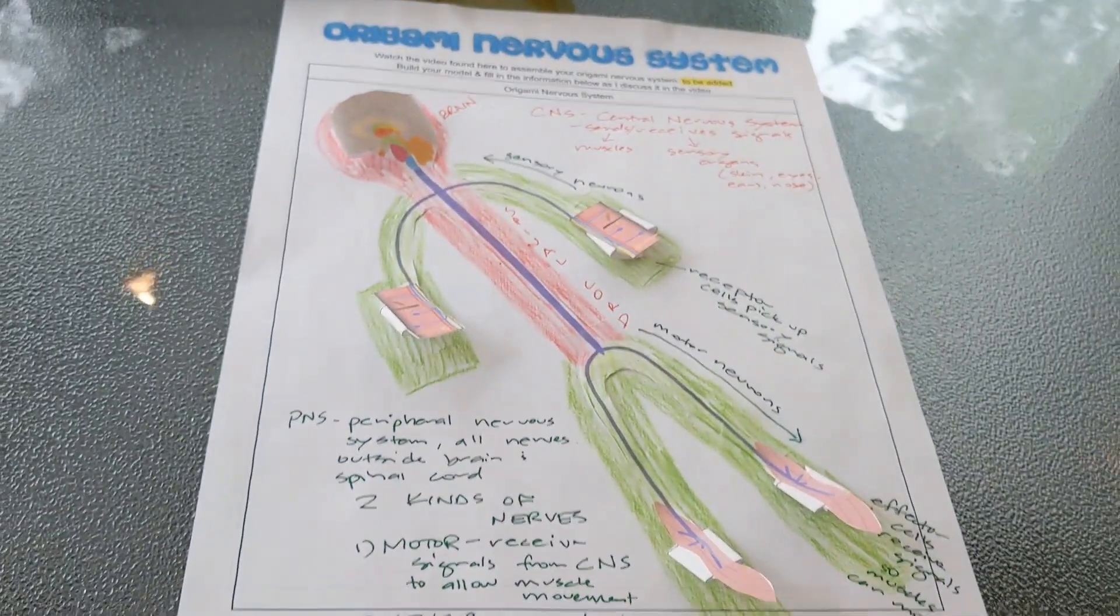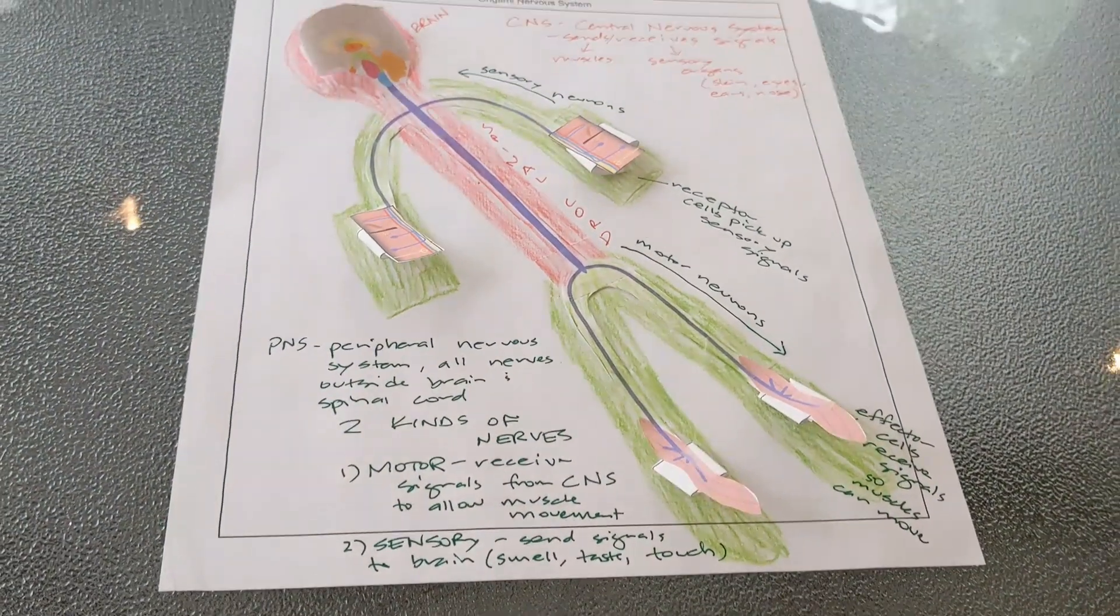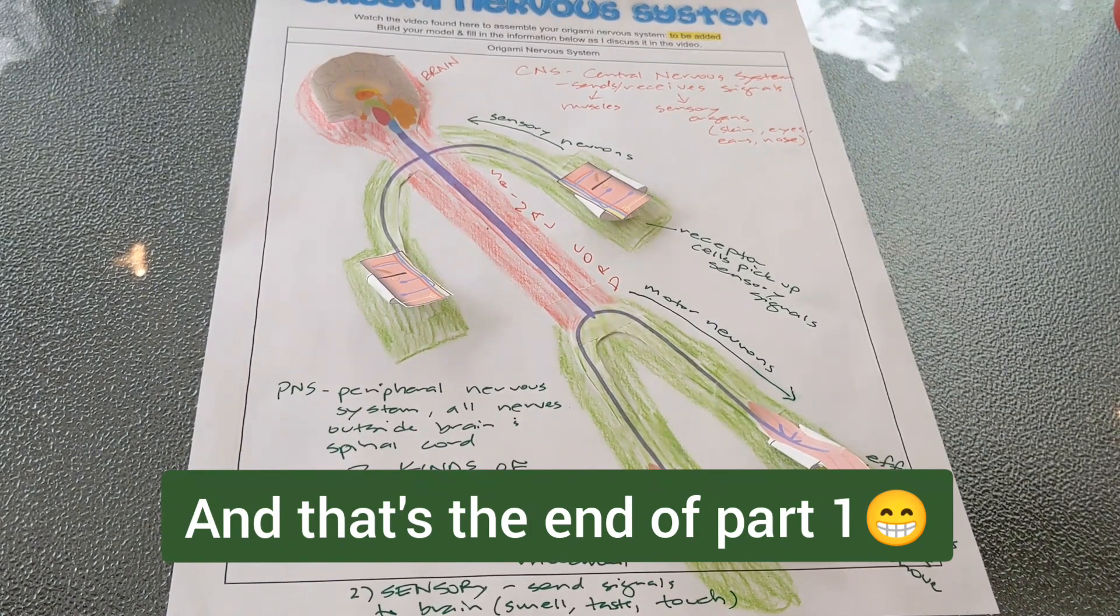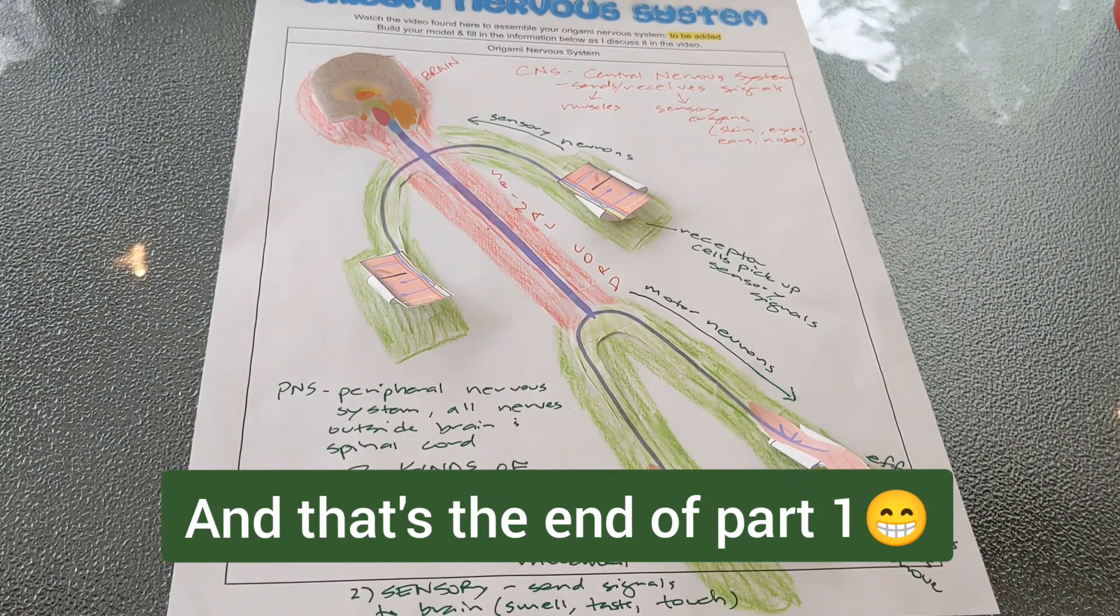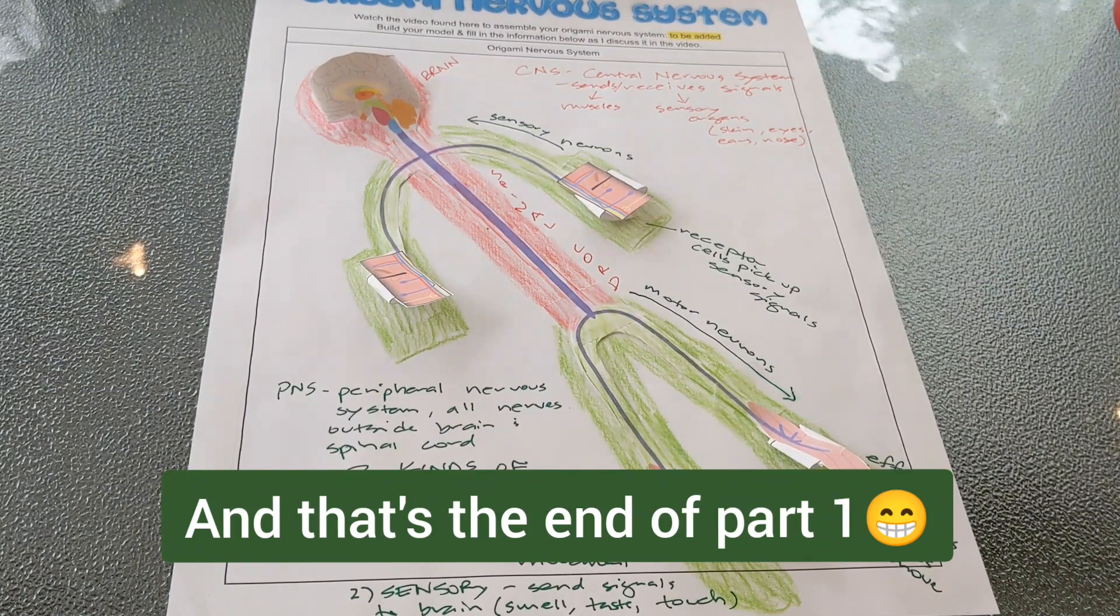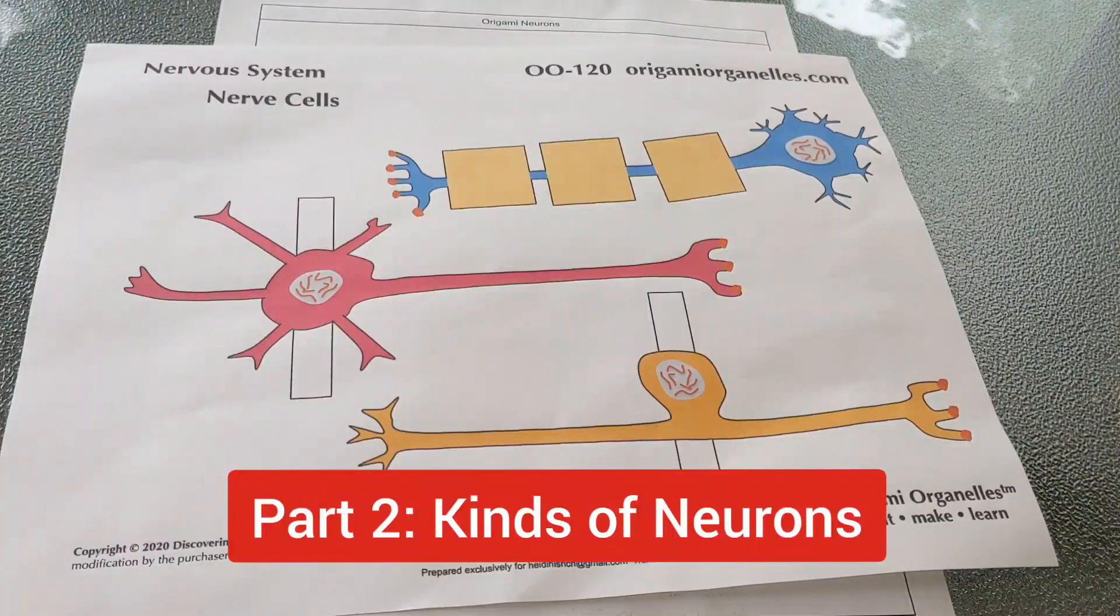That is the basics of the nervous system and what's going to go on the front of the sheet. You can either continue with this activity and do the back or you can potentially come back to it later. For my students we'll come back to it in about a week after we've learned some more about the brain and central nervous system.